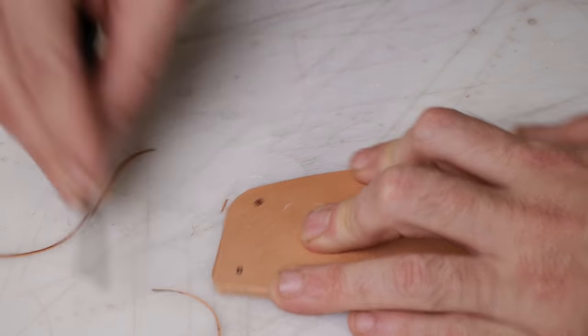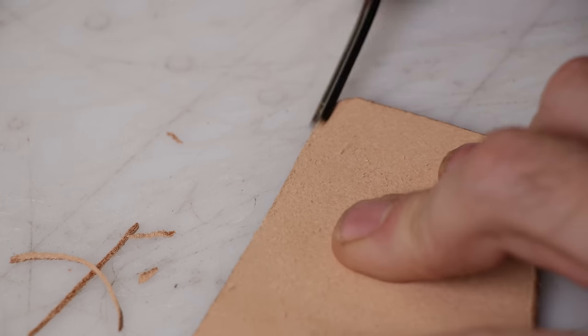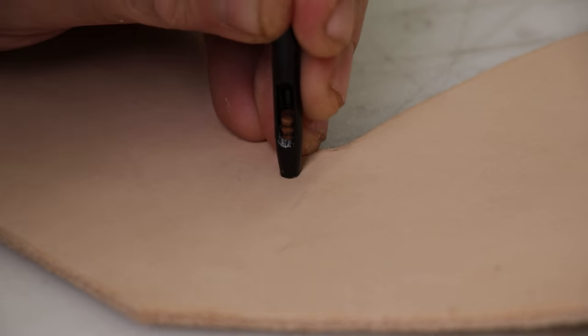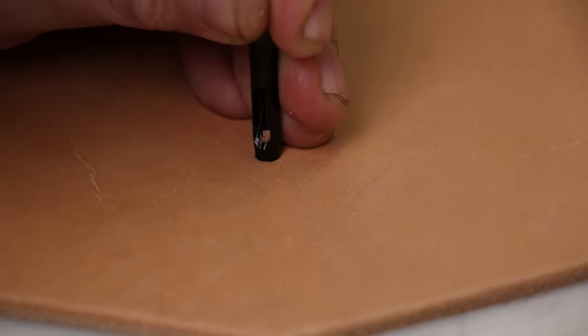For the thinner 10 ounce leather, I use the number four Odin beveler. And for the heavier 12 to 14 ounce, I use the number five Odin beveler. And this 1.8 drive punch for all the holes for my rivets.